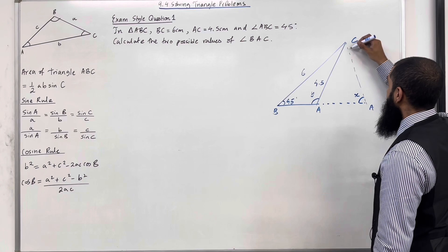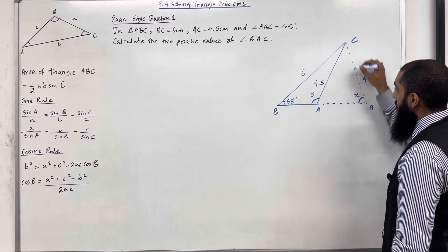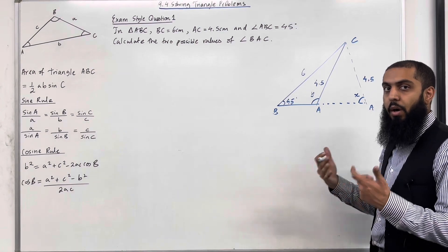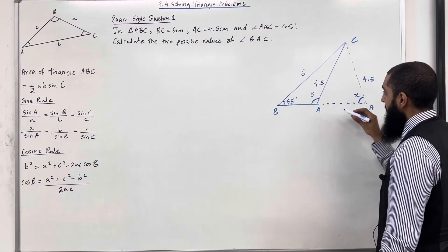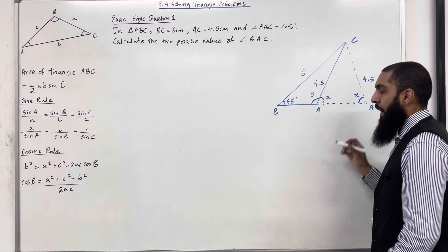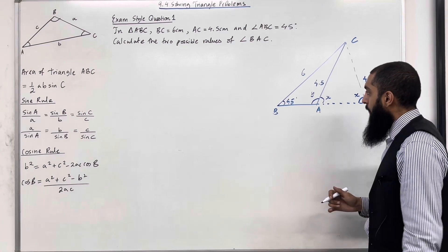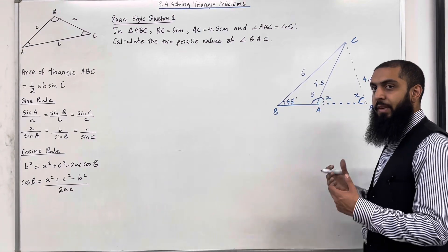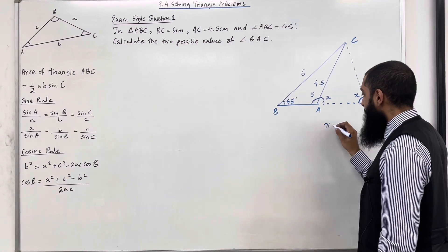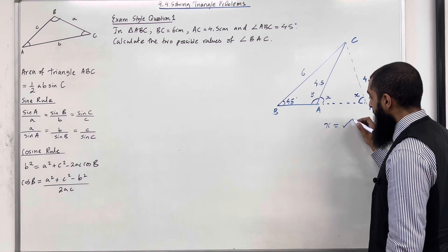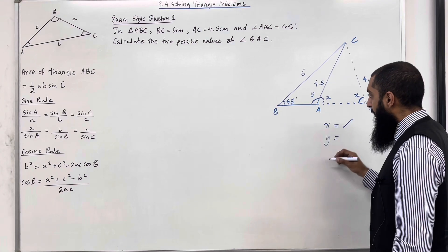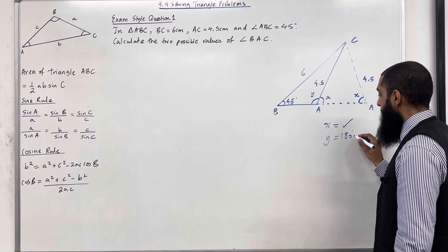The two possible values of angle BAC will be Y and X. We know that AC is 4.5. This inner triangle is an isosceles triangle, and the base angles of an isosceles triangle are equal, so both base angles are X. Over here we have a straight line, and angles on a straight line add up to 180 degrees. So to work out Y, we simply do 180 degrees take away X. So X is my first possible solution of angle BAC, and Y is my second possible solution. To work out Y, we do 180 degrees take away X.